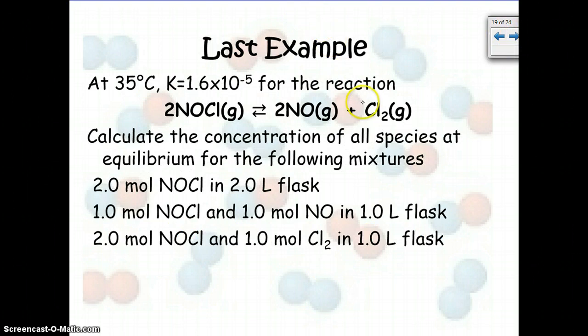All right, so here's the very last equilibrium example I'm going to give you. So you see K is 1.6 times 10 to the negative fifth, so very small. And we are given 3 different equilibrium situations and asked to determine the concentrations of all species once we get to equilibrium.